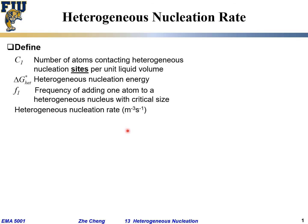So the so-called heterogeneous nucleation rate, which means per unit volume, per time, how many nucleus would be formed. How frequent we are adding atoms to a critical nucleus, times...